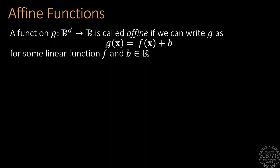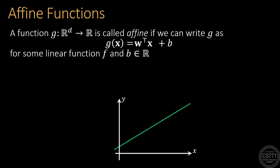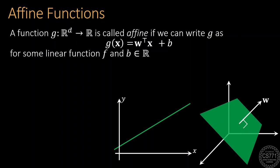Affine functions are a close cousin of linear functions. If you wish to sound fancy, you should tell your friends that affine functions are merely translates of linear functions. However, in more direct terms, every affine function is simply a linear function plus a bias term. In fact, all the functions that we have encountered so far in our ML conversations have all been affine functions.